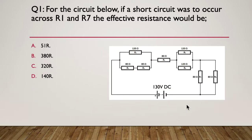Question one: for the circuit below, if a short circuit was to occur across R1 and R7, the effective resistance would be. R1 is up here at 120 ohms and R7 is the 80-ohm resistor across here. If they were short circuited, what would be the effective overall resistance? Pause the video here — it would probably pay to redraw the circuit as you go.